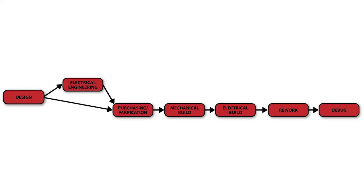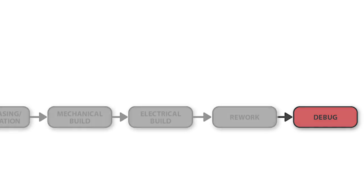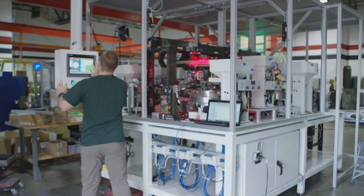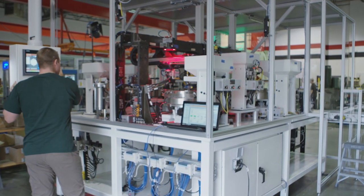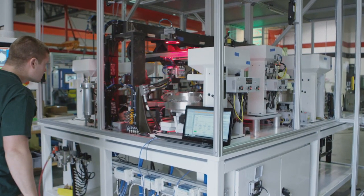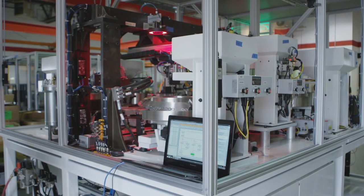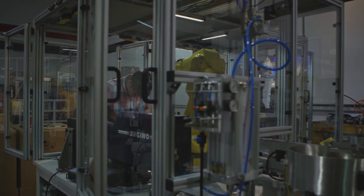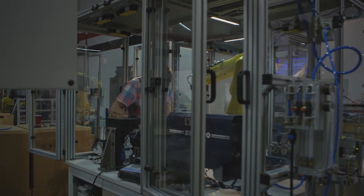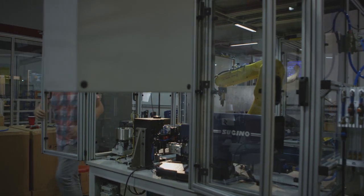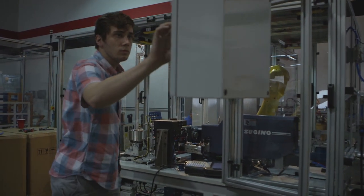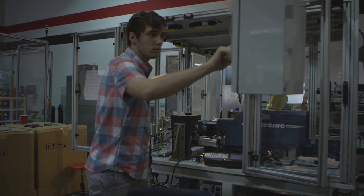The problem with this traditional approach to machine design and development is twofold. First, by sequentially processing the project, you push the riskiest portion of the project — that is, machine debug — to the end. And while you may have budgeted two, three, or four weeks for debugging in your initial schedule, until you get the machine on your floor and it's built, it's difficult to understand what kind of latent underlying issues there may be with the design. Second, once the machine is already built, you've boxed yourself in with regards to design, and you no longer have the design freedom to make significant changes to any individual portion of the machine.